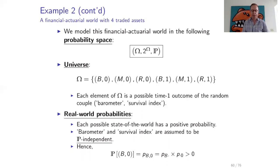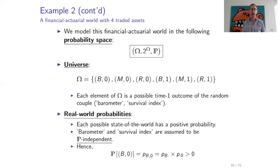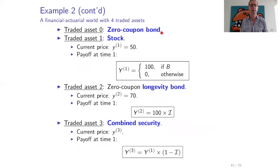We also assume that the barometer and the survival index are independent under the probability measure P — we will denote this P-independence. Hence, for instance, the probability that the economy will be booming and the longevity index will be zero, P(B,0), must equal P(B·) multiplied by P(·0). So the probability of the combined event is the product of the individual probabilities, which is strictly positive since all individual probabilities are strictly positive.